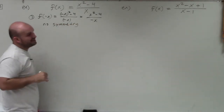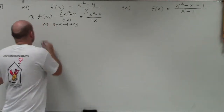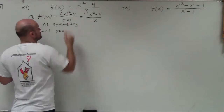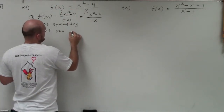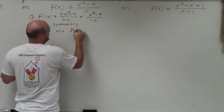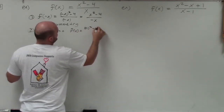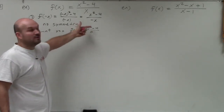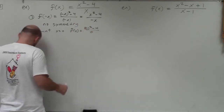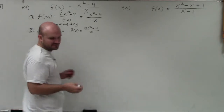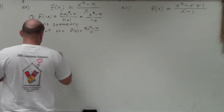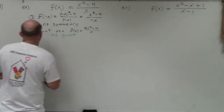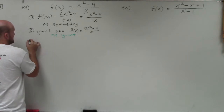Next, identify the y-intercept. Remember, the y-intercept is when x is equal to 0. I'm simply going to plug 0 in for x and solve for f of x. So I have f of x equals 0 squared minus 4 divided by 0. You can see that 0 is in my denominator, so that's going to be undefined. Therefore, there is no y-intercept — the graph does not cross the y-axis.